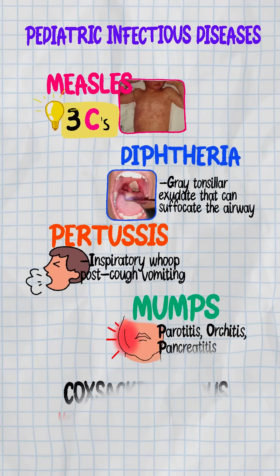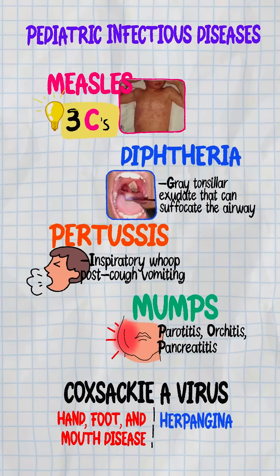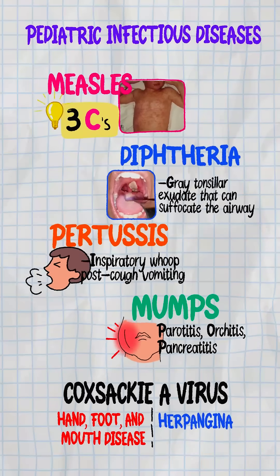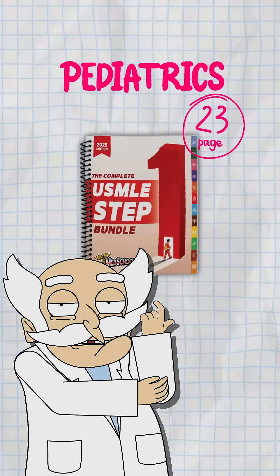Measles has three C's and a rash. Diphtheria has gray membranes, and pertussis whoops and pukes. Mumps hits the glands. Coxsackie can give you either hand-foot-mouth or herpangina. Know the patterns and don't miss the red flags.